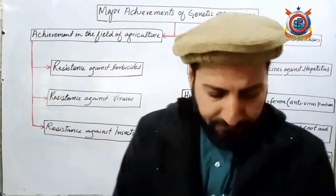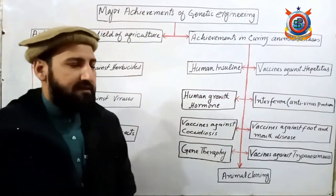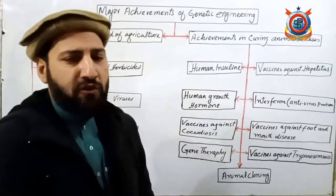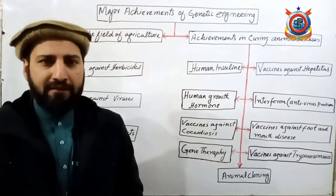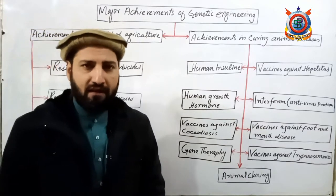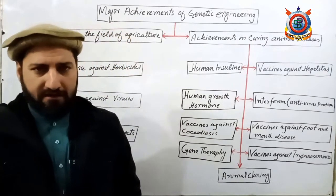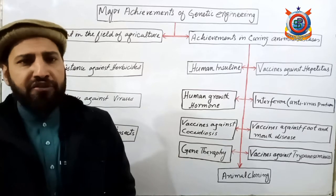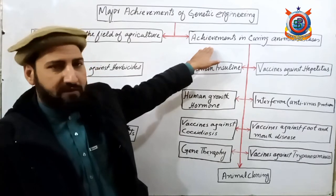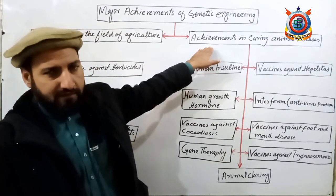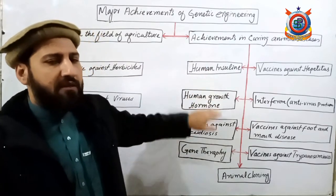یہ تین major achievements تھیں agriculture کے field میں۔ دوسری side پر major achievements in the curing of animal diseases پڑھتے ہیں۔ بہت سارے diseases جو animals اور humans پر attack کرتے ہیں جن سے بہت زیادہ economical loss ہوتا ہے، ان کے لیے treatments develop کیے گئے ہیں۔